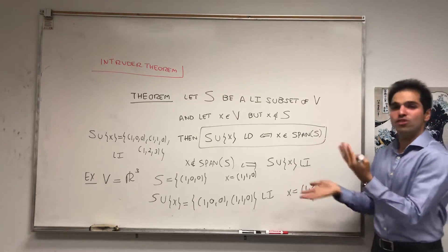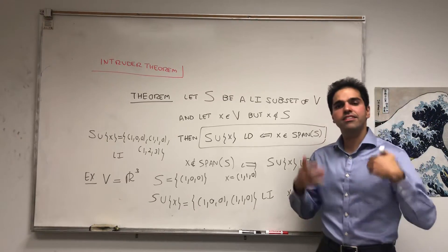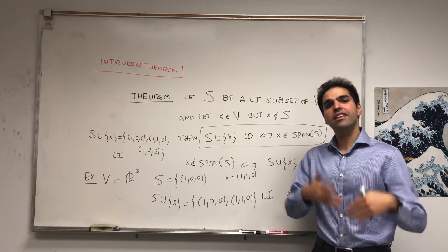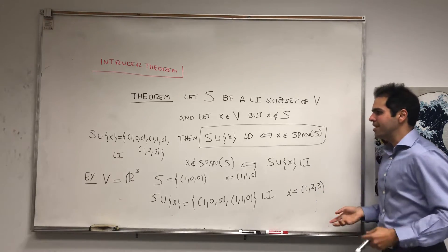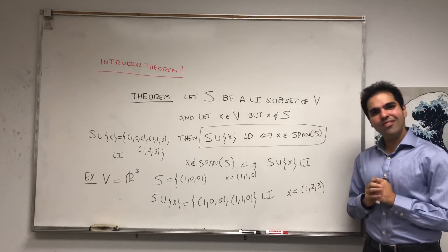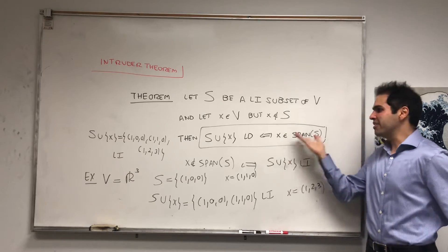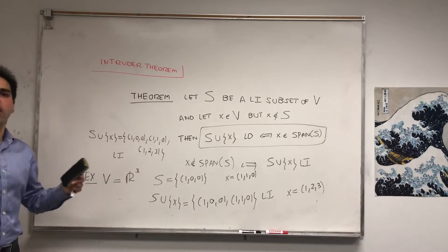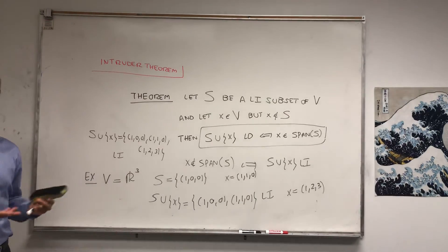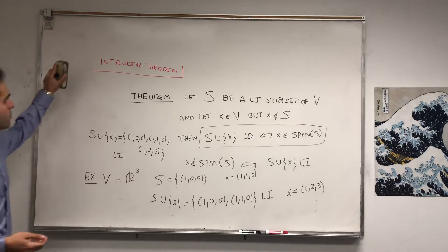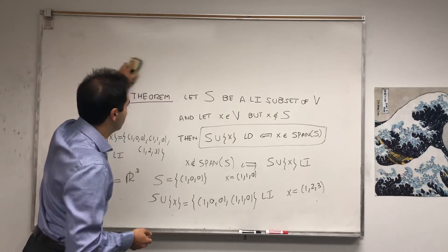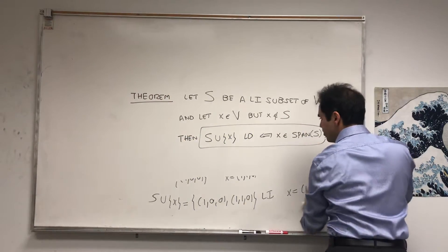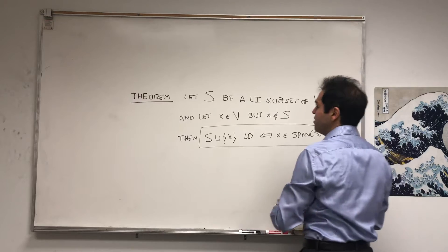So it's a super useful theorem that intuitively says if you add linearly independent vectors to your set, the new set becomes linearly independent. But today we're here to prove this theorem. It's a nice exercise in showing linear independence or linear dependence. Let's prove the easier direction first: let X be in the span of S.